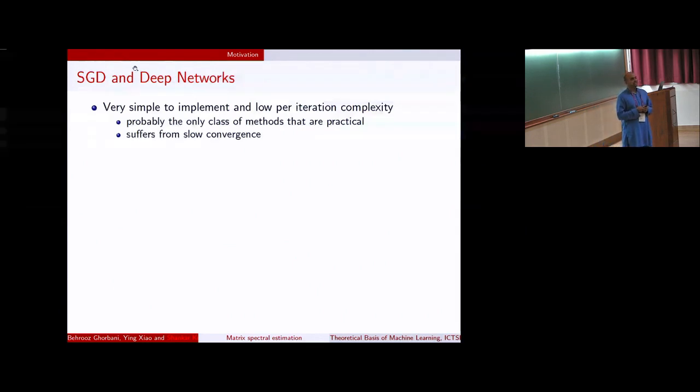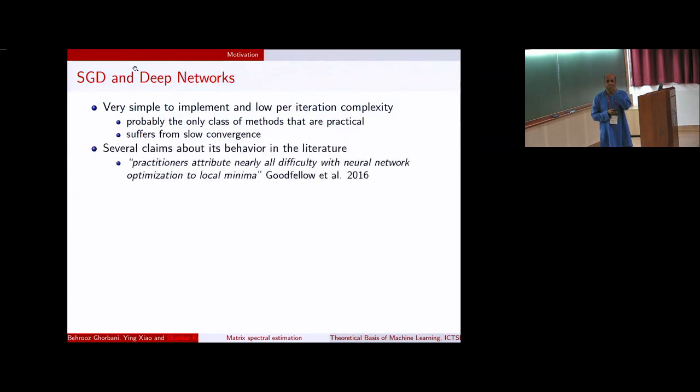SGD is fairly simple. It's one of the easiest things to implement and cheap. There's a low per-iteration complexity, and it's one of the few simple optimization methods that can be deployed in practice. But as I said, it suffers from very slow convergence, and so people have made several claims about what's going on.